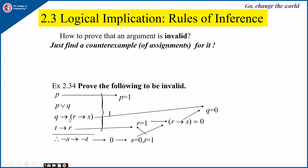When this is 0, the left-hand side q also has to be 0 for the whole implication to be 0, so q will become 0. Now we have s, t, r, and q values. Since q value is 0, for p or q to be true p also has to be 1. This is the way we have to get the proof by counter example — that is, disproved by counter example.